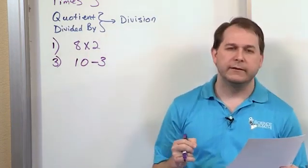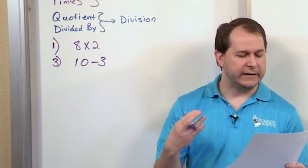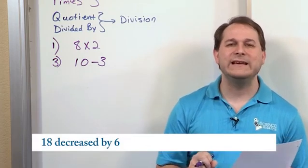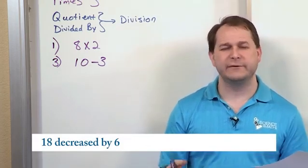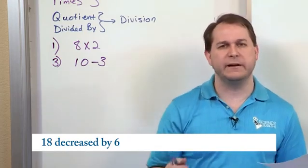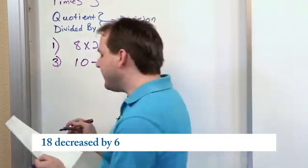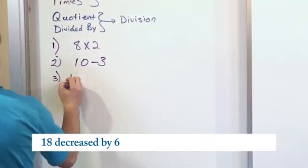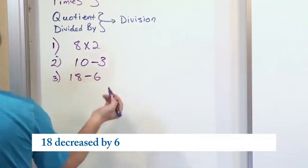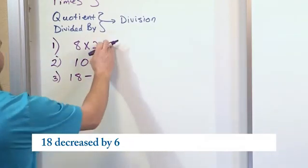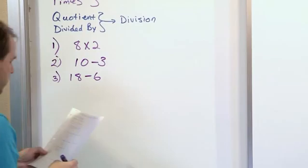Now another way you might see subtraction is, for instance, the next one. Eighteen decreased by six. You think about it, the idea of decreasing something means to subtract. So if we have eighteen decreased by six, eighteen decreased by six would be 18 - 6. So, so far all of these are just single operations.